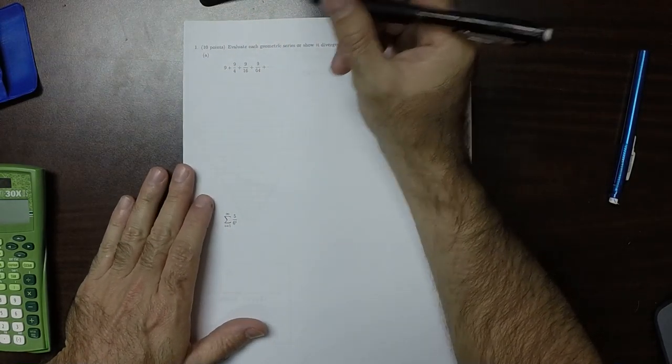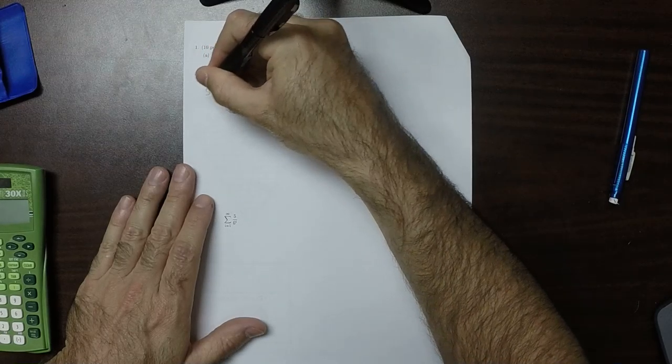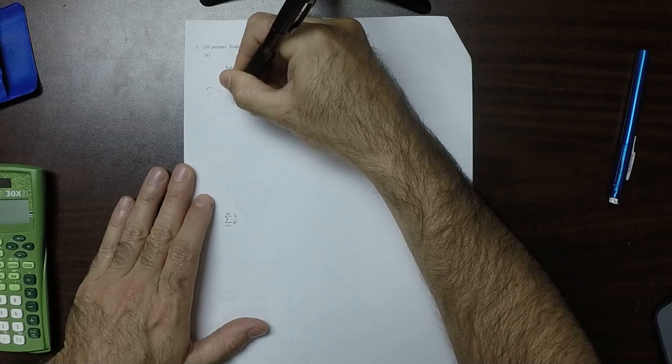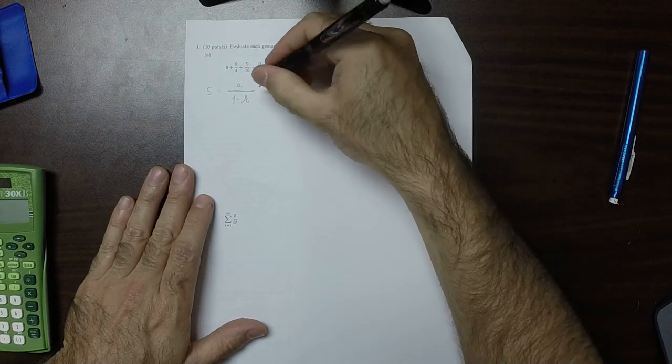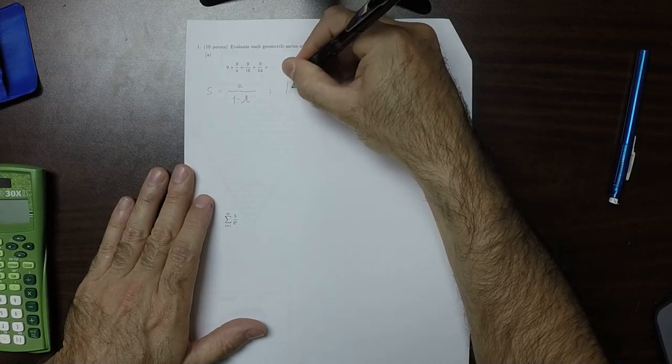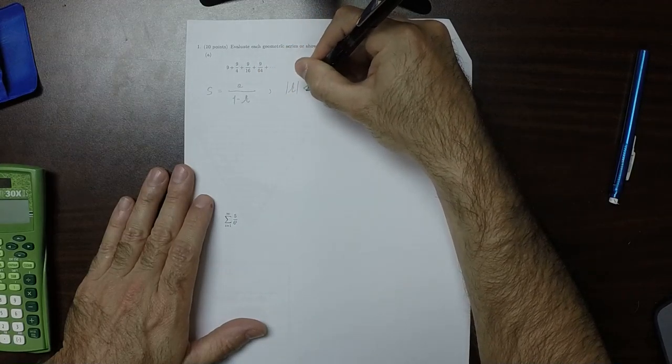The formula that we're going to use is that the sum of a geometric series, the formula is A over 1 minus R, and that is exactly when the absolute value of the ratio is less than 1.